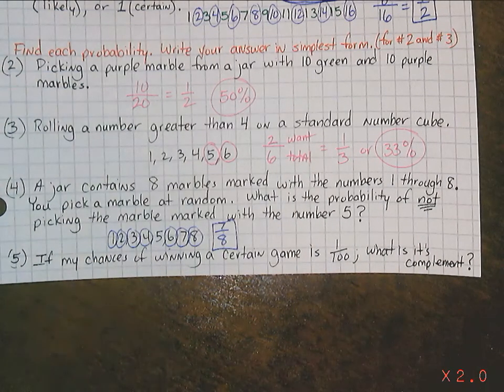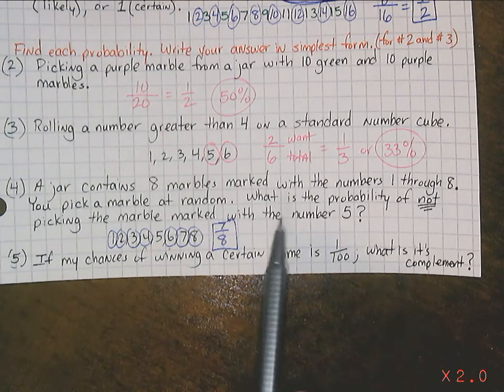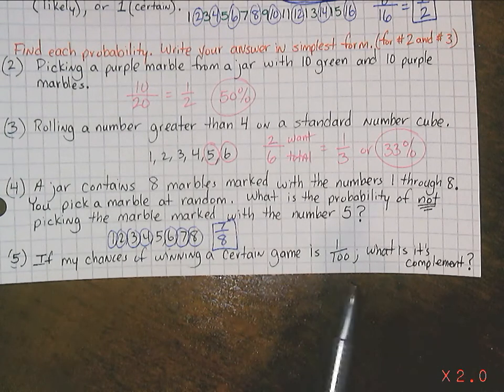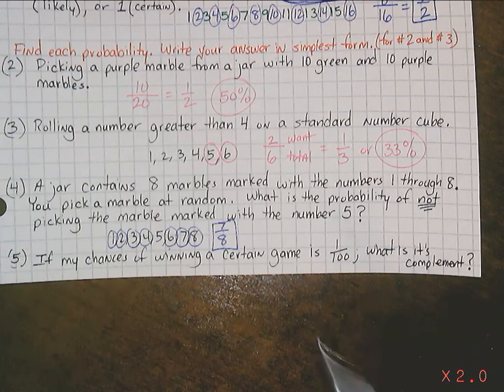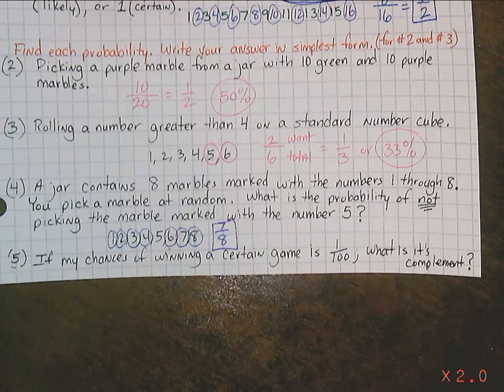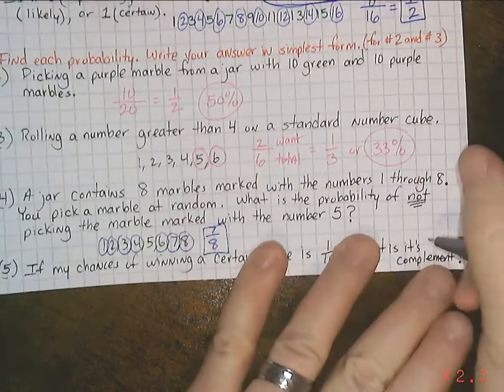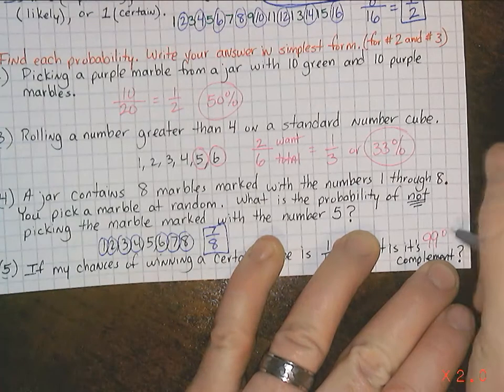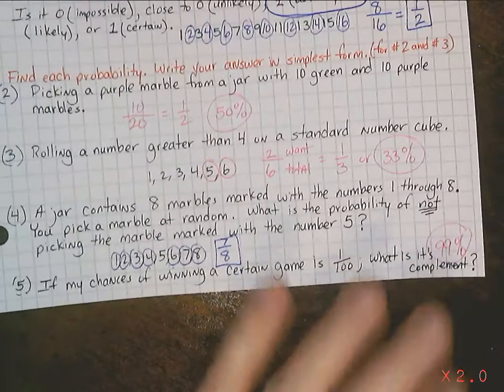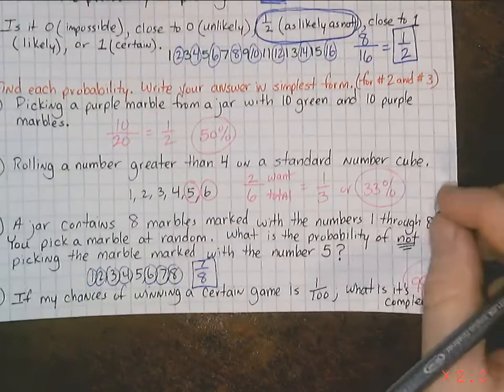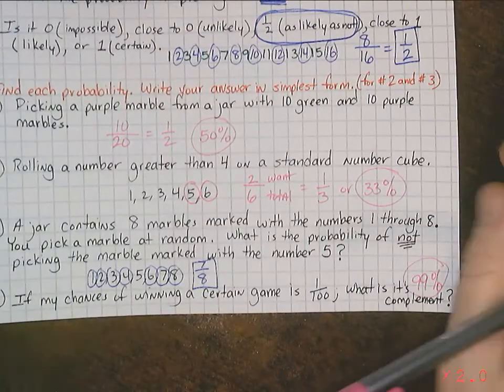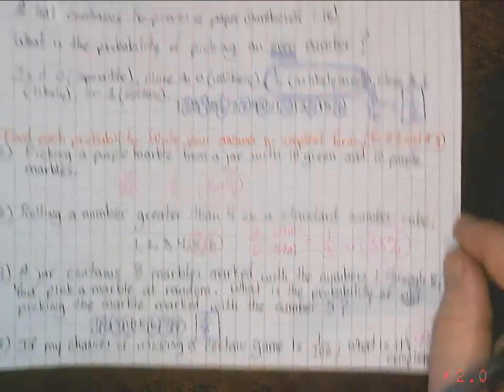So, 5, we're in with this. If my chance of winning a certain game is 1 out of 100, 1%, what's its complement? Well, what's the other side? If 1%, I have a 1% chance of winning, what's the chance of me not winning? 99%. That's going to be the complement. That's what complement means. So, 99%. And if you heard, the house always wins. That's basically the house, right there.